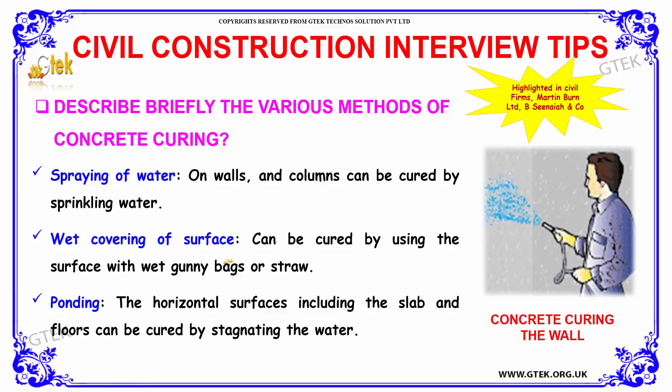Surfaces can be cured by covering them with wet gunny bags or straw. Horizontal surfaces including slabs and floors can be cured by stagnating water on them — this is known as ponding.